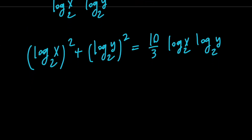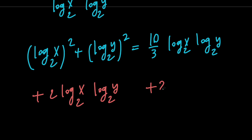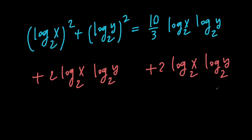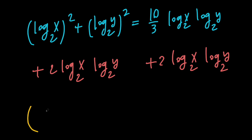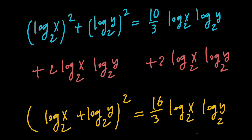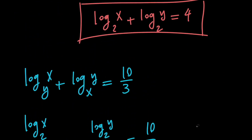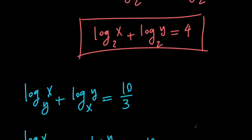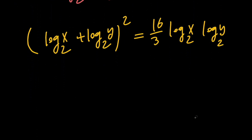Now notice that we have the sum of two squares on the left hand side. So let's go ahead and add 2 times log x with base 2 times log y with base 2 to both sides to complete the square on the left hand side. By doing that, on the left hand side we're going to have the quantity log x with base 2 plus log y with base 2, squared. And on the right hand side we're going to have 2 plus 10 thirds, which is 16 thirds, times the product of log x and log y. Now remember that we know that the sum of log x and log y is 4, so the left hand side is 4 squared, or 16.